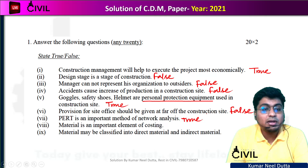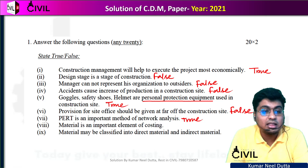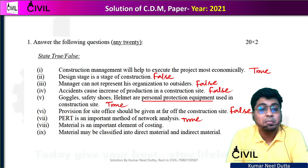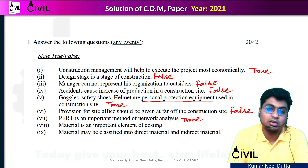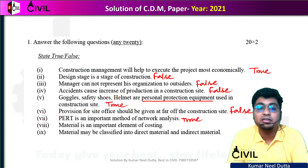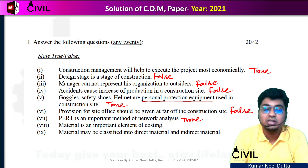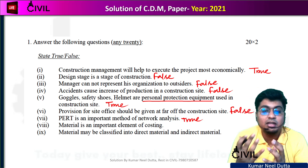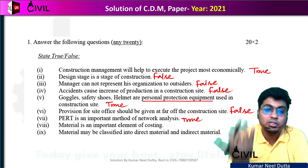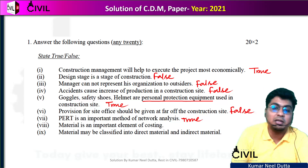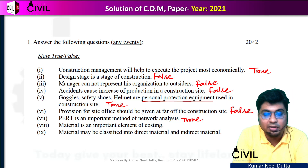Next, number 8: material is an important element of costing. When we have our materials on the cost — like cement, sand, reinforcement, and construction materials — the cost is an important factor. So it will be true.